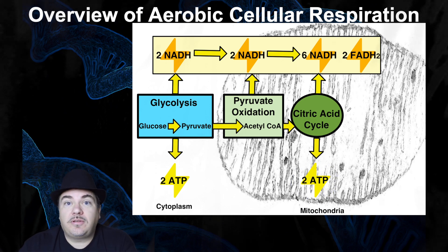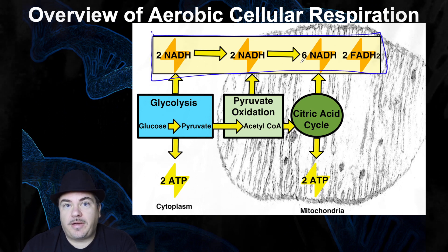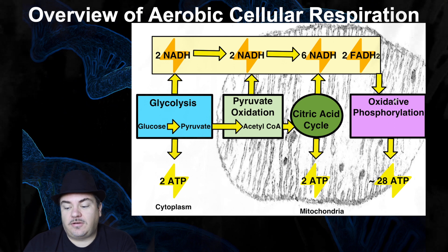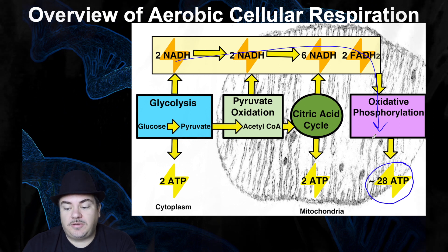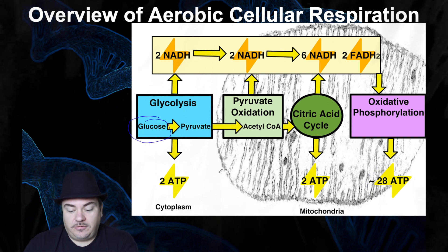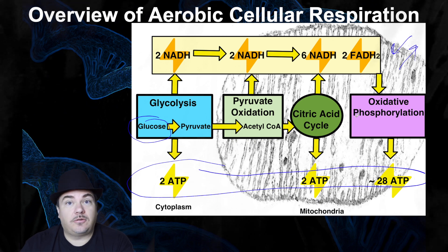So now glucose has been broken all the way down to carbon dioxide, releasing all of its energy. But most of the energy is not yet in ATP — you've only made four total ATP so far. Most of the energy is in these reduced electron carriers. It turns out your cell doesn't really like these batteries, so it takes them into the third main stage, oxidative phosphorylation — made up of the electron transport chain and chemiosmosis — and drains their energy to make about 28 ATP from the one molecule of glucose you started with. Overall, from one glucose molecule, you make about 32 ATP total.